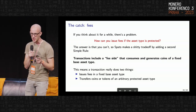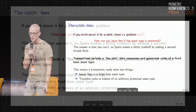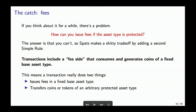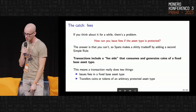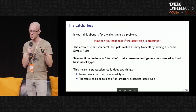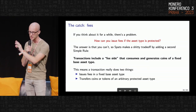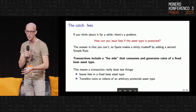But there's a catch. If you don't have to care about fees, this is a beautifully simple abstraction. But unfortunately we do need to care about fees. How can I issue fees to a miner if the asset type is protected? The miner will only know they're going to get some asset, but maybe they don't care what it is and you don't want to reveal it. So SPATS makes a trade-off by adding a second simple rule: transactions have a fee side that consumes and generates coins of a single base asset type — like Monero, which would probably be the base asset type if you extended Monero. A transaction effectively does two things: it issues fees in a fixed, known base asset type that everyone can agree on, and then on the asset side it transfers coins or tokens of some arbitrary, unknown, protected asset type.